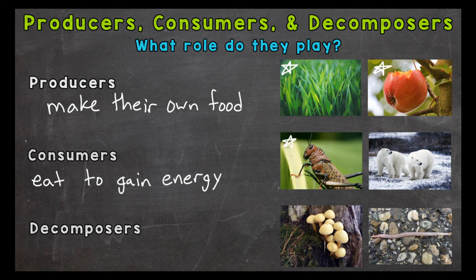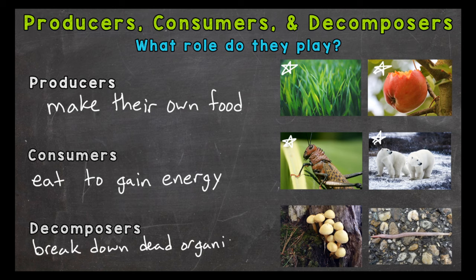Our examples for consumers are a grasshopper and some polar bears. Lastly, we move to decomposers. Decomposers do exactly what their name says — they decompose. That means they break down dead organic material and waste and then return nutrients to the soil. You can think of them like recyclers. The nutrients they pump back into the soil are essential to producers and their role.